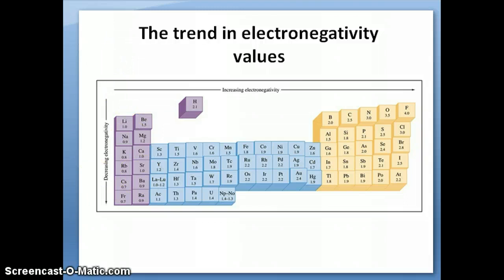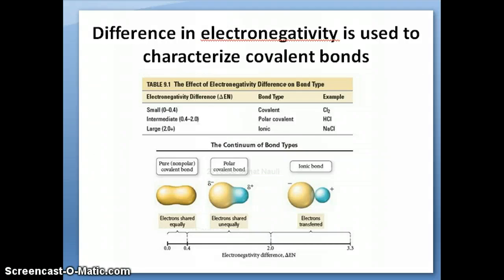So electronegativity therefore allows you to categorize bonds, particularly covalent bonds, as something that we call either a polar bond or a nonpolar bond. A polar bond is basically a bond where there's a clear unequal sharing between the two atoms that make up that bond. So just like the case that I just mentioned in HF, hydrogen fluoride, the hydrogen is less electronegative.